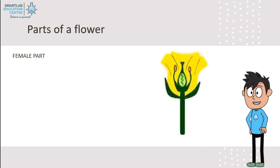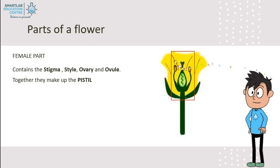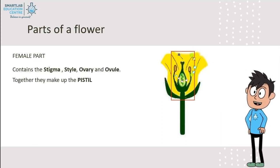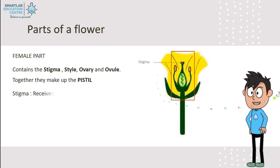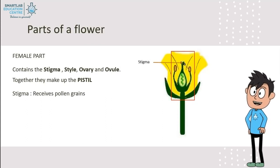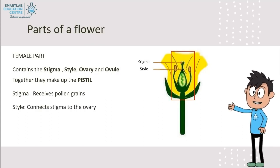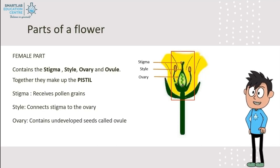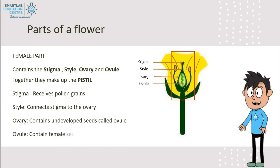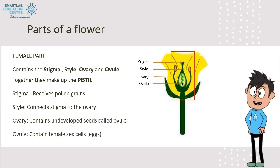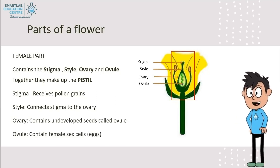Let's look at the female parts of a flower. It contains the stigma, style, ovary, and ovule — together they make up the pistil. The stigma functions to receive pollen grains. The style functions to connect the stigma to the ovary. The ovary contains undeveloped seeds, also known as ovules. The ovule contains female sex cells, which are also called eggs.